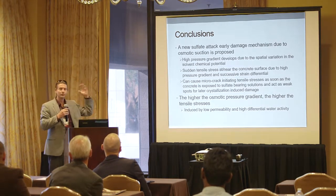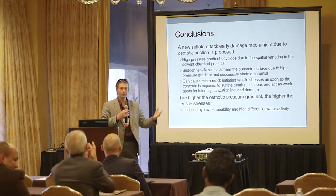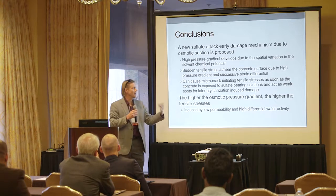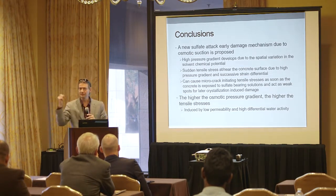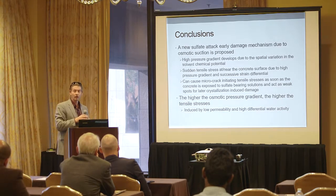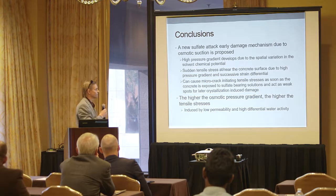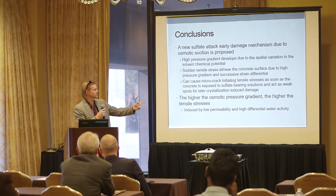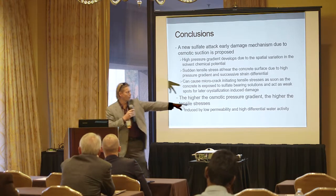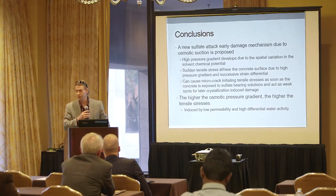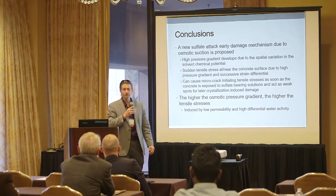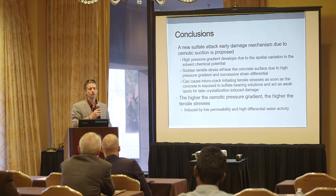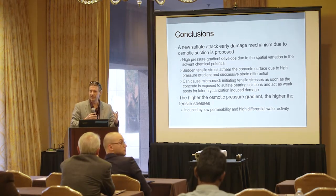Same mechanism — you dramatically reduce the water activity, you start sucking water out of the air or, in this case, out of the concrete. And that gives you a sudden tensile stress right near the surface that can induce micro-cracks, which could then act as weak spots later and accelerate the process of expansion, as well as define the crack pattern you'll see later due to sulfate attack and the formation of ettringite. The higher the osmotic pressure gradient, the higher the tensile stresses — so if you've got a very low water activity on the surface, like calcium chloride which lowers it a great deal, you get very high stresses. Also, if you have a low permeability, you can get a very high spike at that surface. The results with respect to how permeability affects sulfate attack are very mixed in the literature, and this might be partly why.